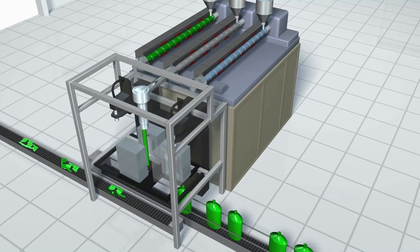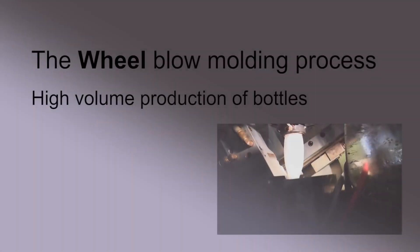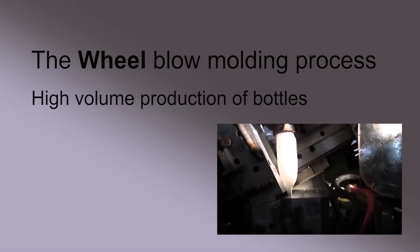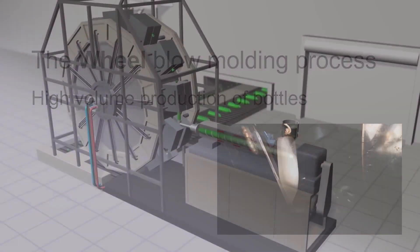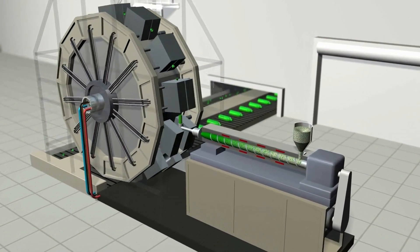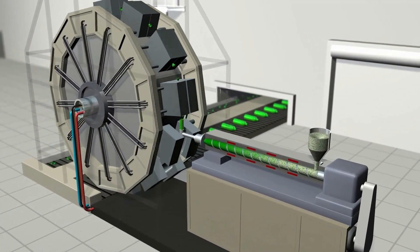A high volume form of blow molding uses many molds mounted onto a continuously rotating wheel mechanism. The extruder creates a hollow tube and as the wheel rotates, each of its molds will open, grab a parison from the extruder die.